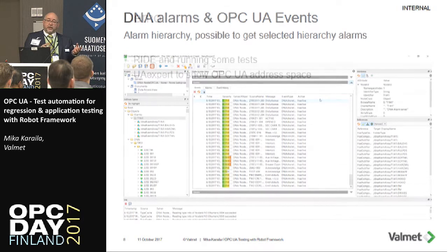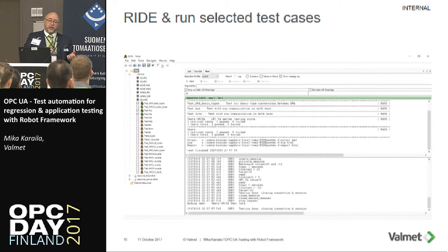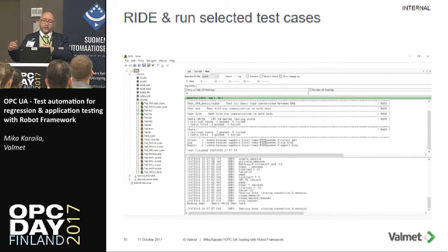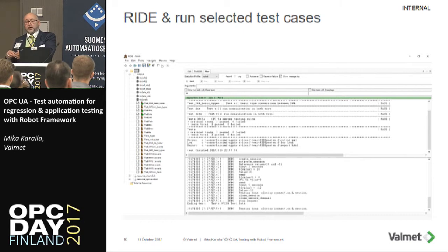If you integrate this and also automate the software build, you can use Jenkins with those free OPC UA command line commands. When you are building the software and the installation package, if you automate the deployment — you can have Jenkins deploy that installation package to some virtual machine, start the server, and then use command line commands to validate that the server is installed and running. You can list the address space, for example. This is how we have made the Jenkins integration.